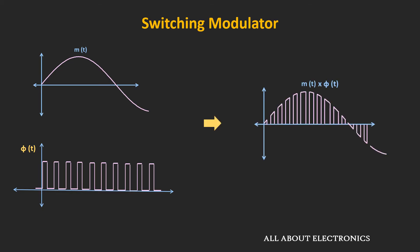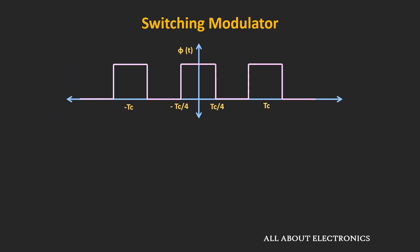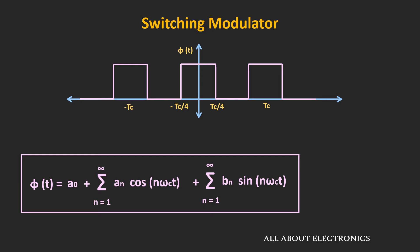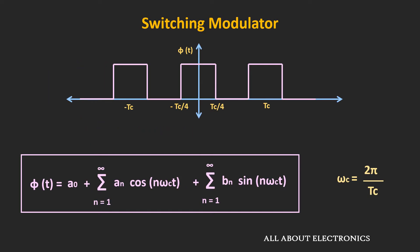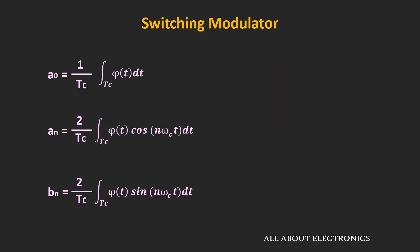If we expand this pulse train using the Fourier series, we can see that the product of the message signal and this Φ contains our required term — that is m(t) times cos(ωct). First, let's represent this pulse train using the Fourier series. For simplicity, we will assume that the amplitude of this pulse train is equal to 1. This is how the pulse train can be expressed using the Fourier series, where ωc equals 2π divided by Tc, the time period of the pulse train. The coefficients can be found using these expressions. The pulse train is even symmetric, so all the coefficients of the sine term will be equal to 0 — that means all Bn will be equal to 0.